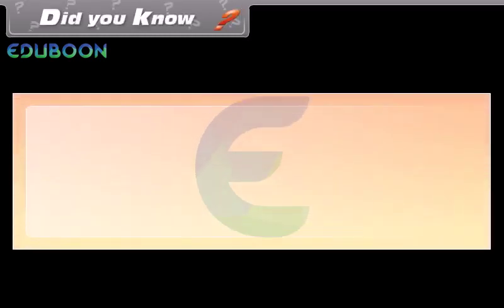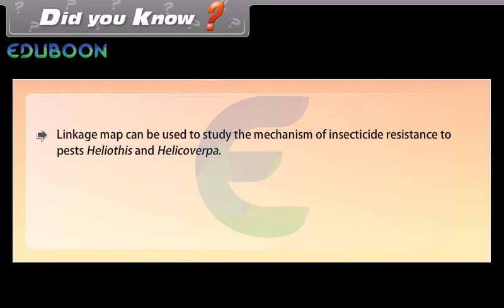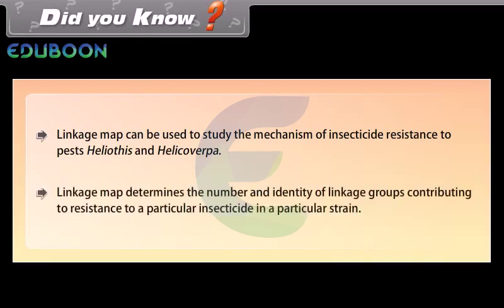Did you know? Linkage maps can be used to study the mechanism of insecticide resistance in pests Heliothis and Helicoverpa. Linkage maps determine the number and identity of linkage groups contributing to resistance to a particular insecticide in a particular strain.